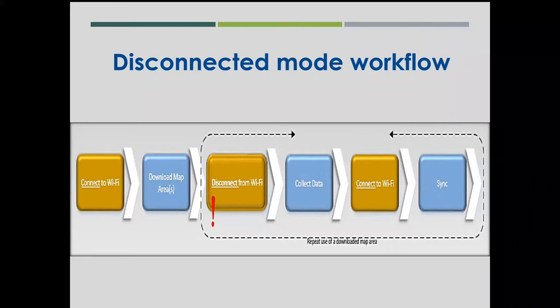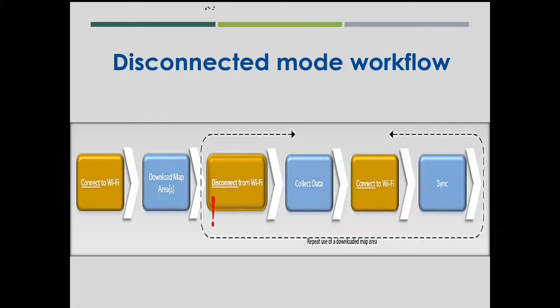The sync pulls data into your downloaded map area that may have been added by other users, and also pushes data you've collected back up to the hosted service. This allows for near-daily synchronized ability to monitor and make decisions. We recommend disconnected mode even if you have a good wifi connection or cellular plan, because working live creates constant communication between your device and the portal server — which can cause delays if the portal is overloaded or has any issues. Working disconnected really protects you from network issues.